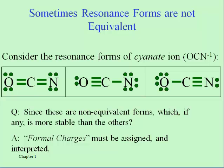Here are three resonance forms for an ion called cyanate, and it would be worth your practice to verify these on your own. If you start with one oxygen, one carbon, one nitrogen, and a negative charge, that's 16 electrons altogether and that leads to these three possibilities.